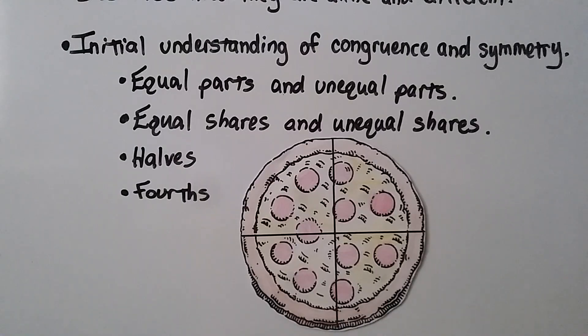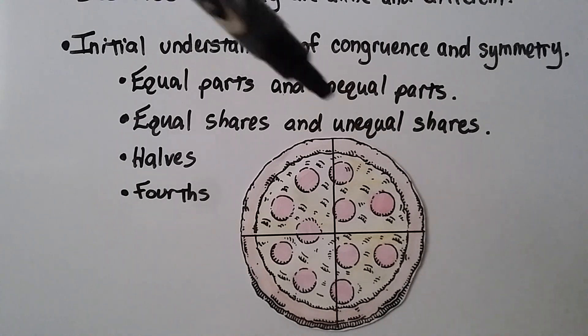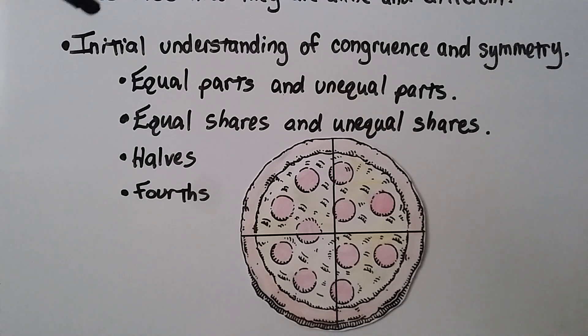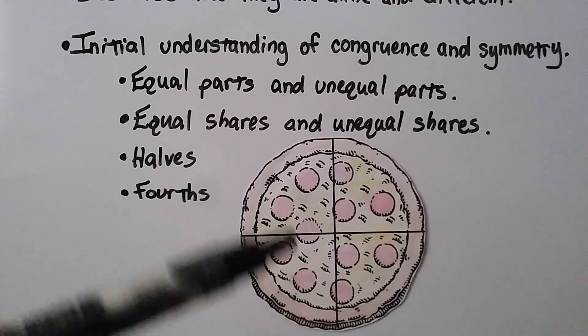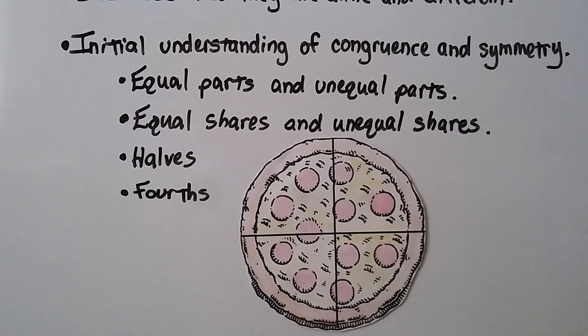They need an initial understanding of congruence and symmetry. So they don't need to completely understand it. Just have been introduced to it and have an initial understanding of it. Do they know equal parts and unequal parts? Equal shares and unequal shares? Do they know halves and fourths of an object?